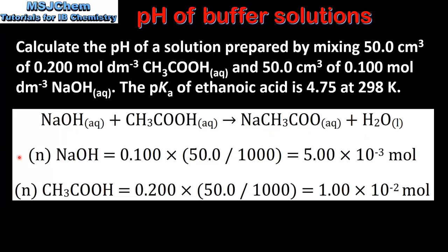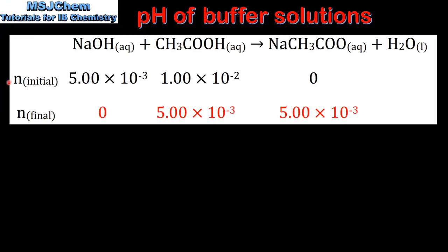Next we'll calculate the amount in moles of sodium hydroxide and ethanoic acid using the equation: number of moles equals concentration times volume in decimeters cubed. Here we have the amount in moles of sodium hydroxide and ethanoic acid. The limiting reactant is sodium hydroxide, therefore the excess reactant is ethanoic acid.